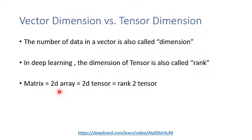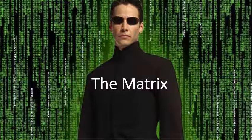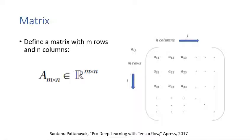Please be careful about the difference between vector dimension and tensor dimension. Now let's talk about the matrix — here is Keanu Reeves in The Matrix, which has nothing to do with the matrix in linear algebra, but it was a very cool movie. A matrix is a two-dimensional array, or 2D tensor of data.